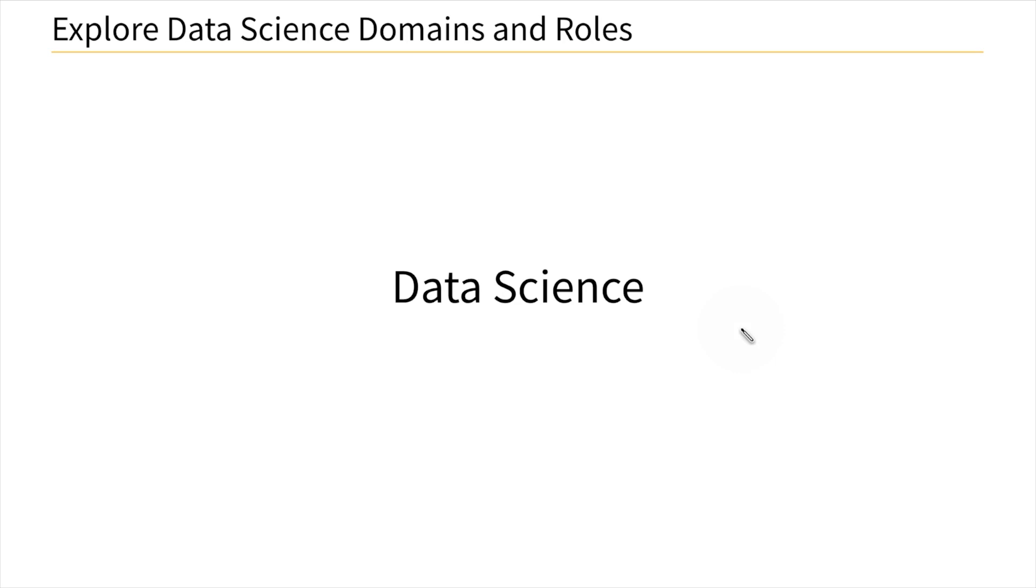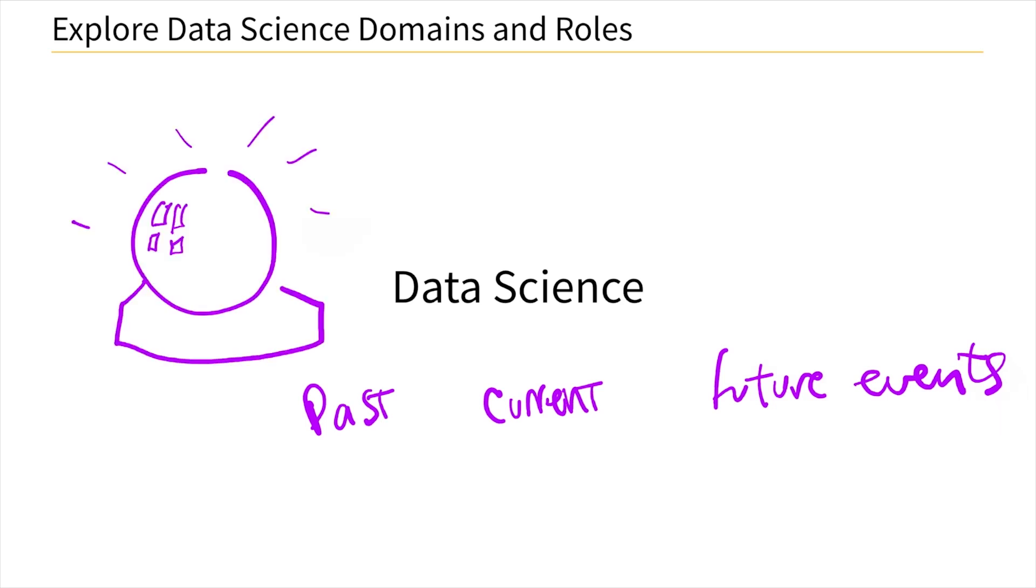Proper data science is the systematic study of data to gain insights into, and here's the important part, the past, the current or the present, and future events. So it's not just historical data, but also predictions. We're going to make predictions, crystal ball stuff. So that's a crystal ball. So predictions, that's pretty cool.